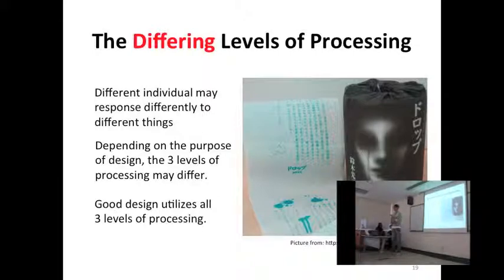Now, as a designer, we must know that good design doesn't mean that all levels of processing have to have a similar level. Different individuals may respond differently. I mean, depending on the purpose of the design, the three levels of processing may differ. If you can see, this is actually a Japanese novel toilet roll. Those who understand Japanese and like reading novels and spend a lot of time inside the toilet, don't know doing what, would find this highly behavioral. It's very usable for them. So, what about those people who don't understand? This just simply becomes a reflective item. It's just cool. And therefore, a good design utilizes all three levels of processing. When you are employing emotion design model, you should never neglect any one of them.